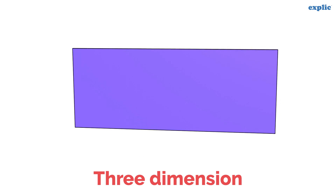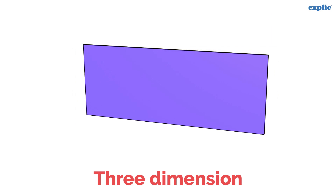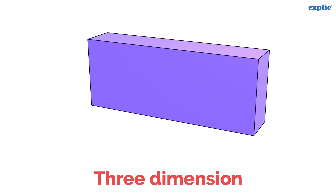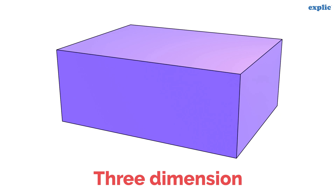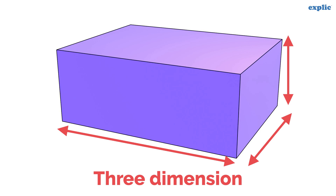Let's increase the breadth of the rectangle by stacking it together. Did we achieve the third dimension as the breadth of the rectangle? Yes. The shape we got is a cuboid, which is a three dimensional shape. A three dimensional shape has length, height and breadth.